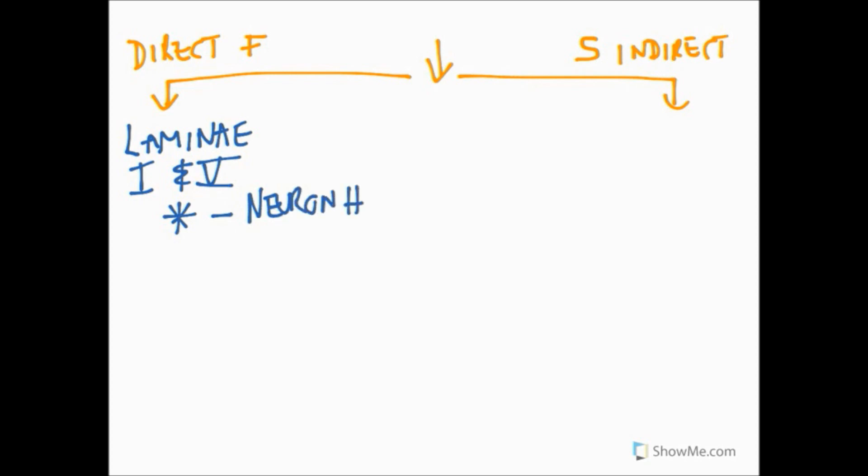This second order neuron will cross over or decussate. So we're going to get the decussation of that second order neuron. From here we're going to get the second order neuron ascending on the now contralateral side of the spinal cord to reach the thalamus.